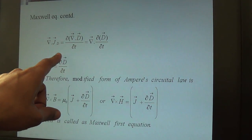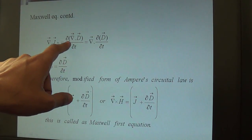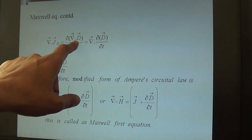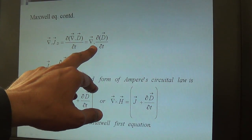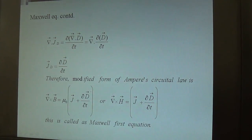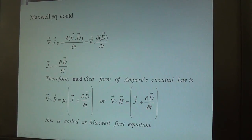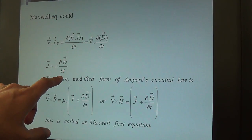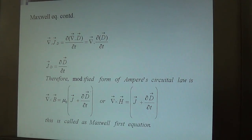Substituting the value of ρ, we get ∇·J_D = d/dt(∇·D). Rearranging, the divergence operator comes out, and the differentiation of D with respect to time is essentially the displacement current density. So J_D = ∂D/∂t. Putting this value into the equation, the modified Ampere's law becomes ∇×B = μ₀(J + ∂D/∂t), and this formula is now valid for both DC and AC.